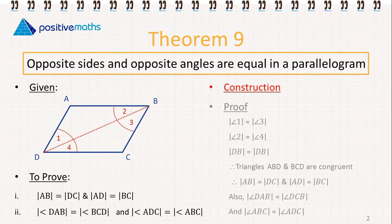Let's go through the proof. In order to prove that the opposite sides and opposite angles are equal in a parallelogram, what we really want to do is prove that the two triangles we've made with the diagonal line are congruent. If we do that, then the opposite sides are equal and the opposite angles are equal.